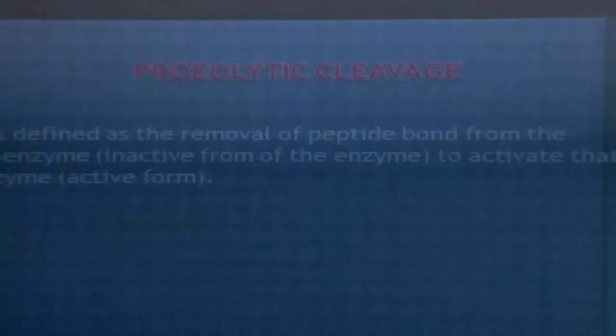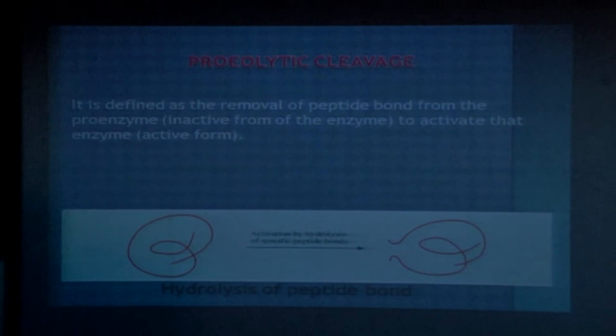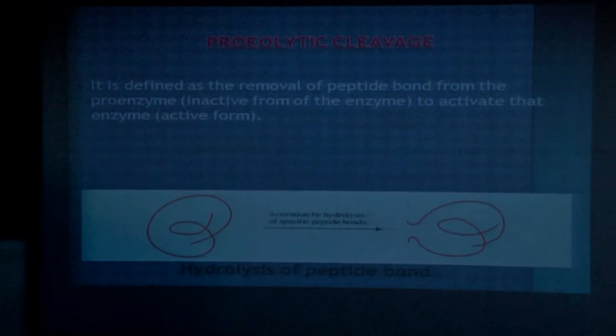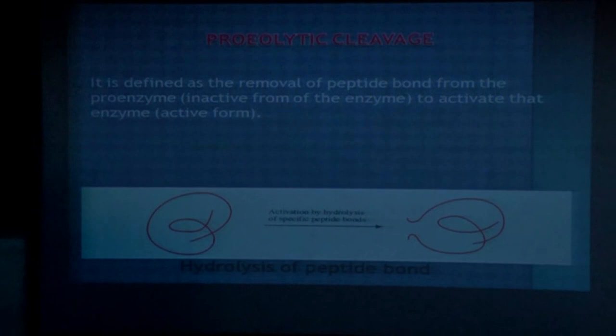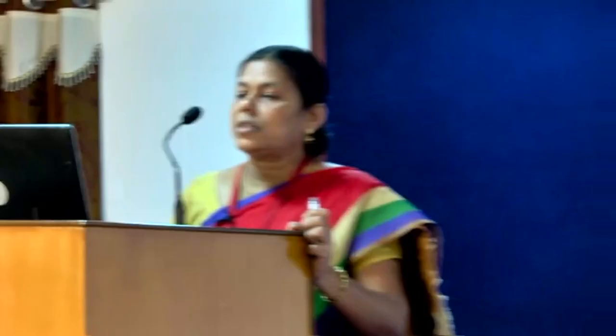This is the hydrolysis process — the proteolytic activity of the enzyme. In this case, the proenzyme in inactive form is converted to the active form by hydrolysis. During hydrolysis, conformational changes take place on the surface of the enzyme, and as a result the inactive form is converted to the active form. One example is chymotrypsinogen, the inactive proenzyme, which is converted to the active form: chymotrypsin.